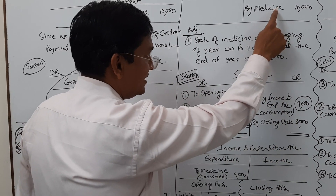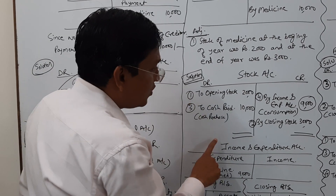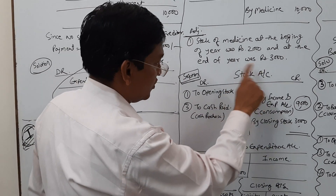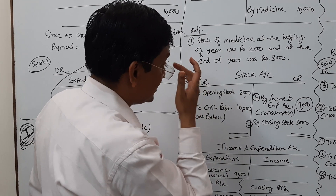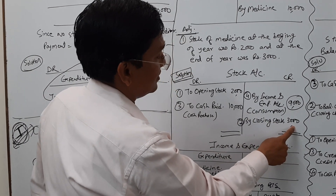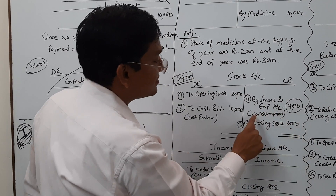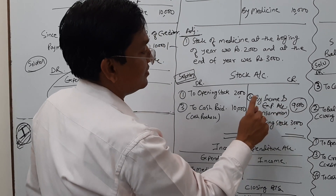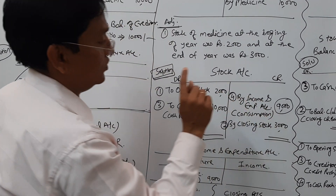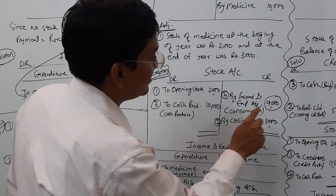Now, the balancing figure of this stock account: if you look at the debit total — 10 plus 2 equals 12,000 — minus the closing stock of 3,000. So 12 minus 3 equals 9,000. This 9,000 is the consumption. This is written in the income and expenditure account: by income and expenditure account — consumption 9,000.